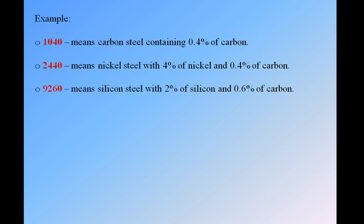Example: 2440. The first digit 2 means it is nickel steel. The second digit 4 indicates the percentage of nickel. The last two digits 40 divided by 100 gives 0.40% carbon. Another example: 9200 — starting with 9, it is silicon steel. The second digit 2 indicates the silicon percentage. The last two digits 00 are 100 times the actual carbon percentage.